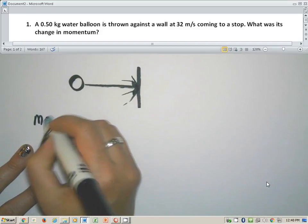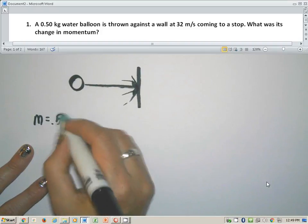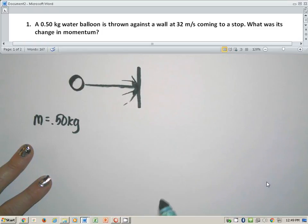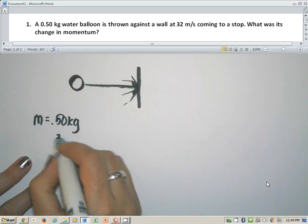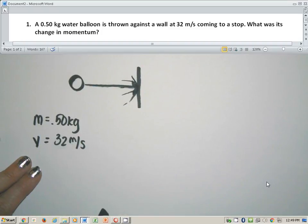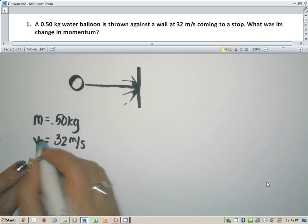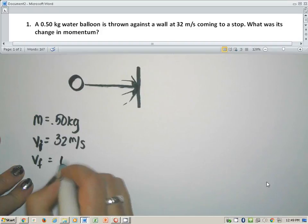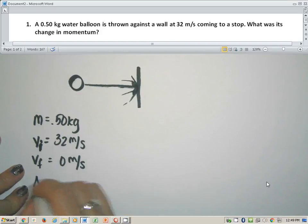So if we look at our problem up above, we'll see that we have a mass of 0.50 kilograms and that it has a speed of 32 meters per second. So that gives us a velocity. And then it says it comes to a stop. So what that tells me is that this is v_i and that v_f is going to be zero because if you stop, your speed is zero. And it says, what is the change in momentum?